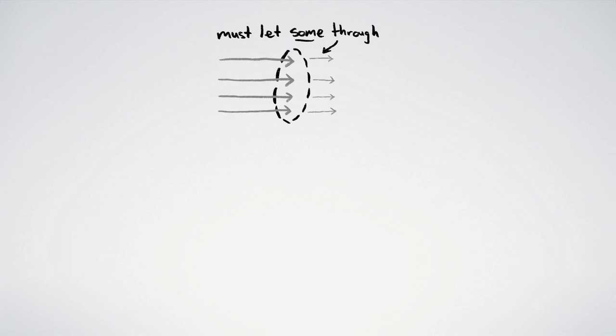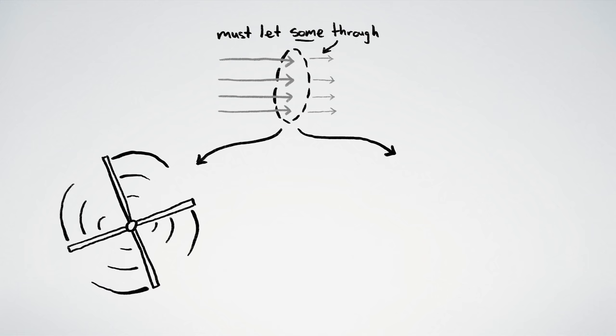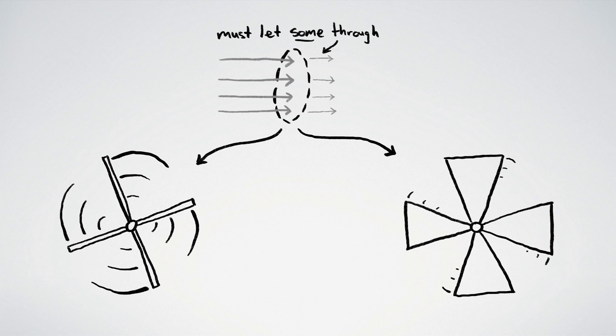Since windmills can't block the wind too much, they're faced with a trade-off. Either have fast-moving blades that cover a small amount of area, or slow-moving blades that cover a large amount of area.